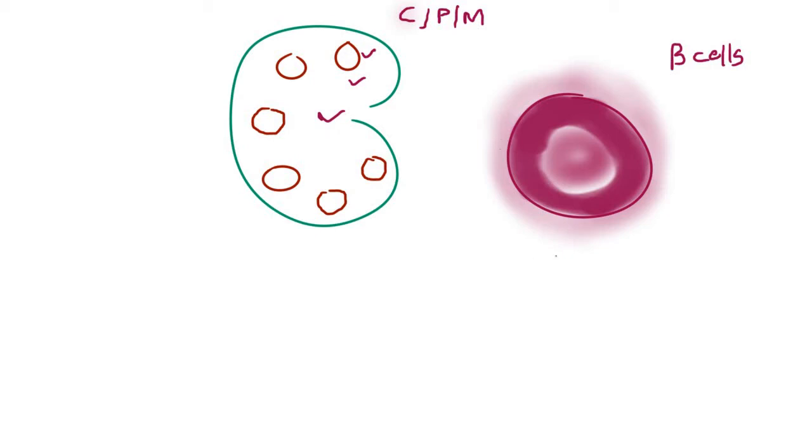Within the cortex we have structures called follicles. These follicles are round structures formed by aggregation of B lymphocytes. In the center of the follicles, the B cells are loosely arranged, and as a result, the center has a lighter appearance called the germinal center.